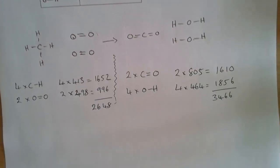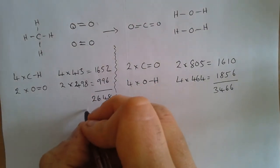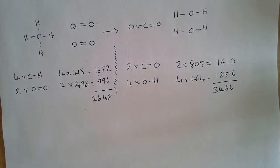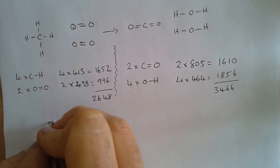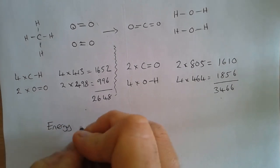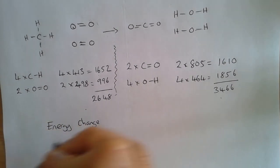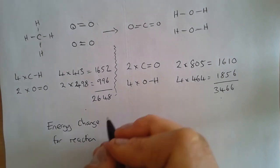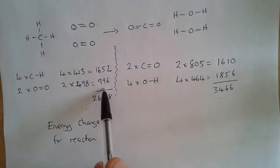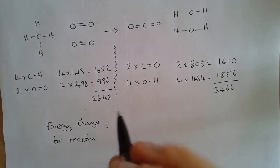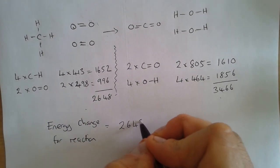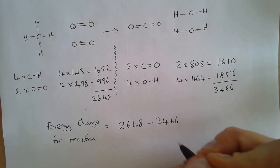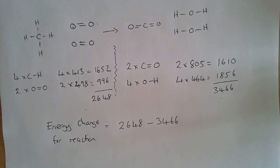Now once we've done that, so this is our bond breaking in the reactants and this is our bond making in the product, we can do a calculation to calculate the energy change for the reaction. And that's going to be the energy needed to break the bonds in the reactants, and we subtract from that the energy released making the bonds.